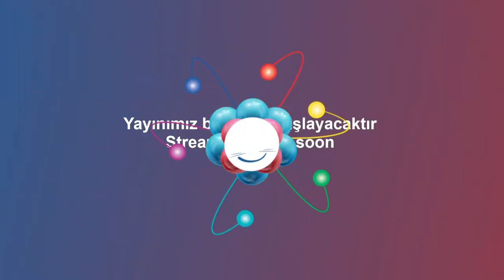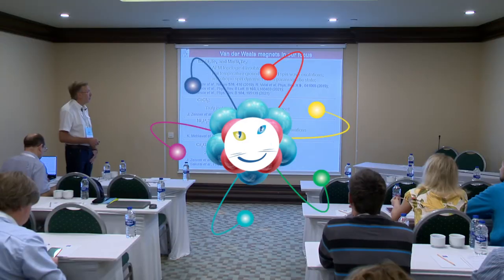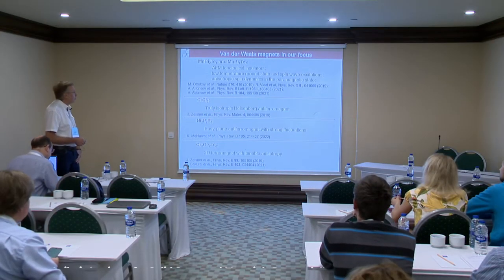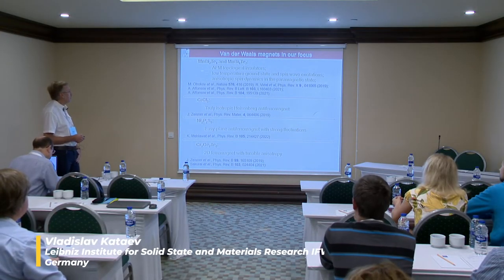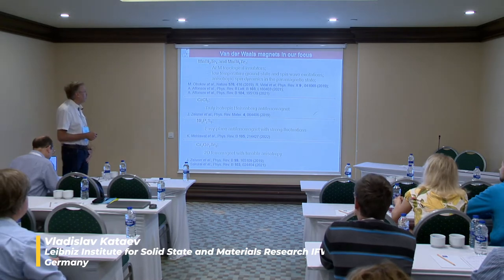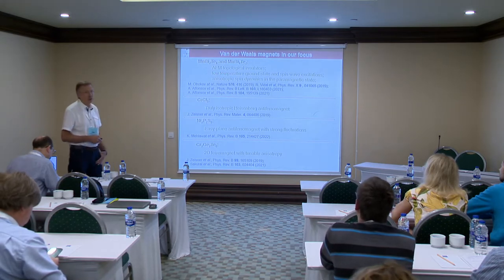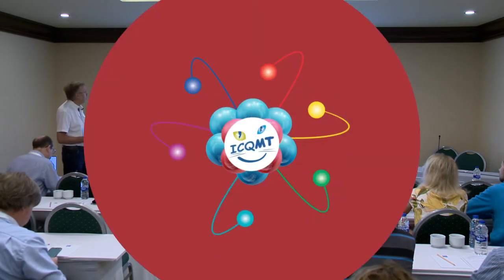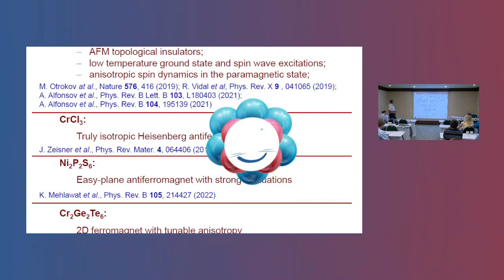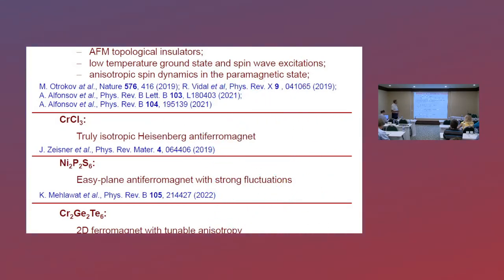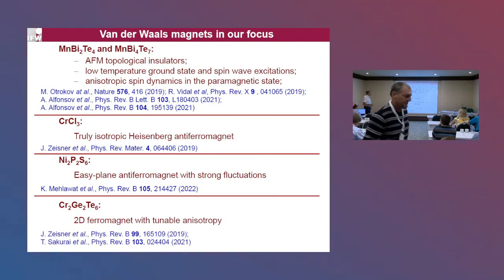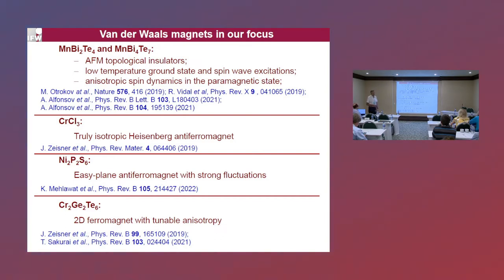This work concerns quasi two-dimensional magnets which show some very spectacular properties. For instance, manganese bismuth tellurides are newly discovered anti-ferromagnetic topological insulators where, with the aid of ESR spectroscopy, one can provide interesting insights on the low-temperature ground state and excitations, anisotropic spin dynamics, and peculiarities of the non-trivial electronic structure at the surface of these materials.